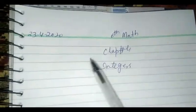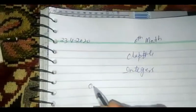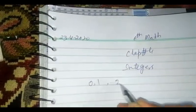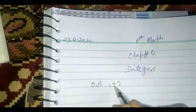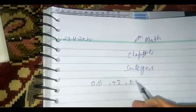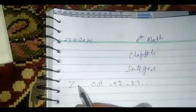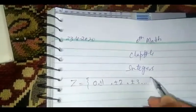Assalamu alaikum 6th class. Today we are doing chapter number 4, integers. Integers are the whole numbers along with negative sign. Whole numbers are positive numbers, so whole numbers along with negative sign are called integers. Integers are represented by Z.